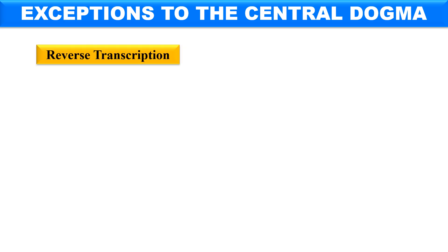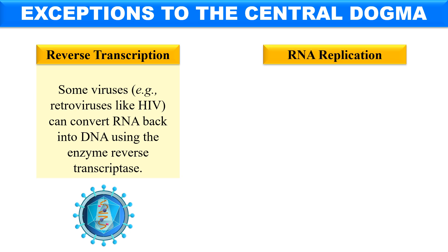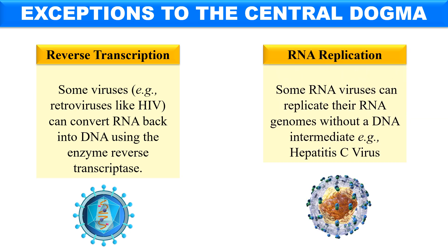There are certain exceptions to this central dogma. The first is reverse transcription — certain viruses like HIV can convert RNA back to DNA. So in the central dogma information moves from DNA to RNA, but some viruses follow reverse transcription, converting RNA to DNA. Another exception is RNA replication, because certain viruses have RNA as genetic material and replicate their RNA — for example, the hepatitis C virus. These two processes are the exceptions to the central dogma.